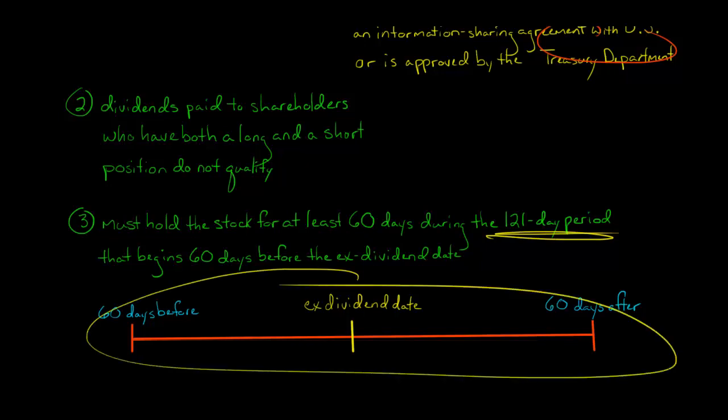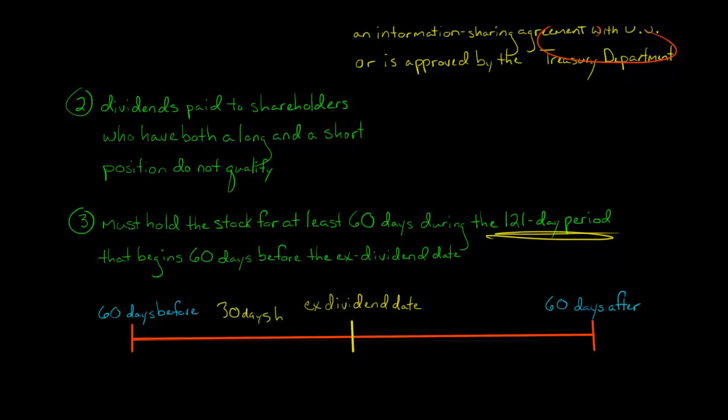During this 121-day period, you have to hold that stock for at least 60 days for any dividends you receive from that stock to be considered qualified and get those lower tax rates. Let me give you an example. Say you just bought a stock 30 days before it went ex-dividend, and then one day later, you sold it.